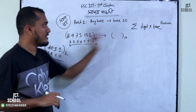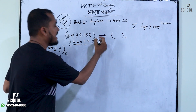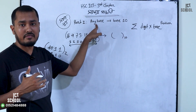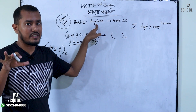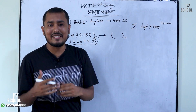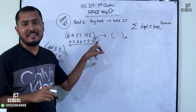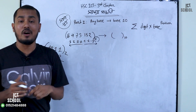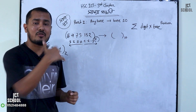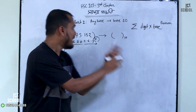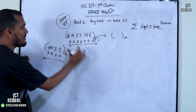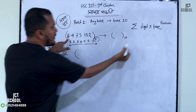We can go to any base. The same way, base 8 to base 10, base 2 to base 10, base 16 to base 10 — and then we go to base 8, base 2, base 16 as well. Base 10 to any base, or any base to base 10, then go to the target base.